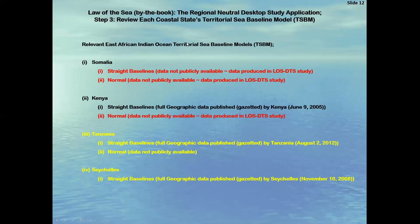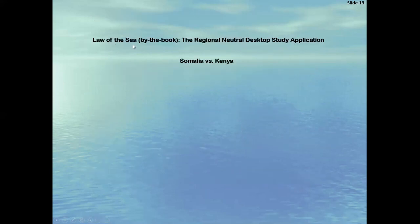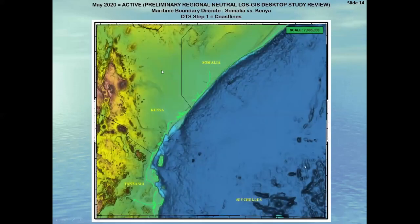The relevant East African Indian Ocean territorial sea baseline models: Somalia claims straight baselines and has legislation, but they're not publicly available — we did reverse engineer them in the desktop study. Kenya published straight baselines on June 9th, 2005. Tanzania and Seychelles both use straight baselines as well. For step one — mapping and reviewing relevant coastlines — this is the key setup. We need to understand the coastal front. Our desktop study is at a 1-to-7-million scale overview. Here's Somalia, here's Kenya, a bit of Tanzania, and the Seychelles way to the southeast.